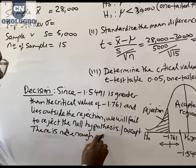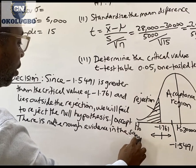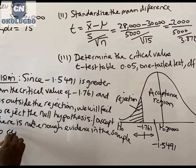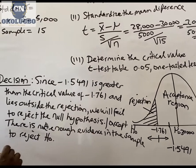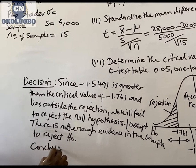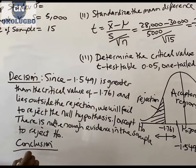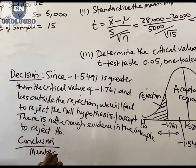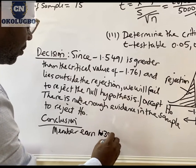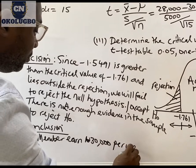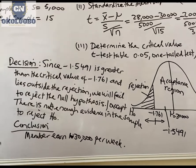There is not enough evidence in the sample to reject H0. Our conclusion is that members earn 30,000 Naira. We will not reject H0.